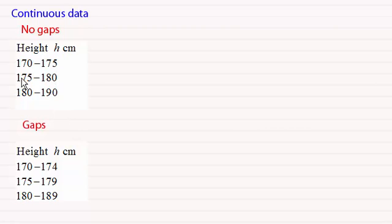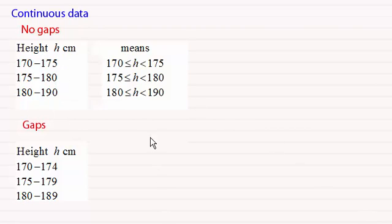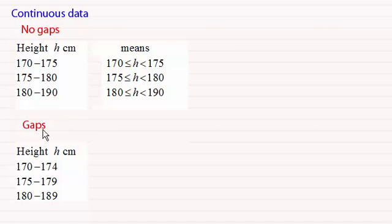What do they mean? For the first table with no gaps, the height h is always greater than or equal to the lower bound, and the upper bound is always less than the number at the end. However, when we've got gaps — in this example, the gaps are one unit between 174 and 175, and the same with 179 to 180 — what we do is fill those gaps by going halfway across the one unit.